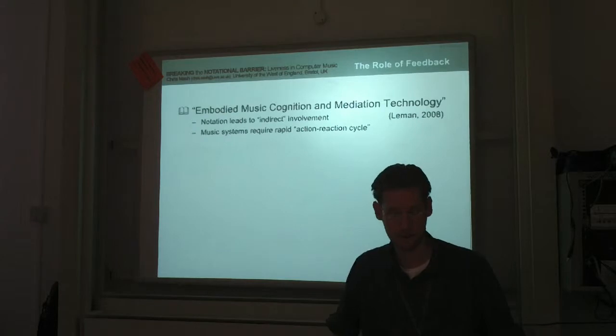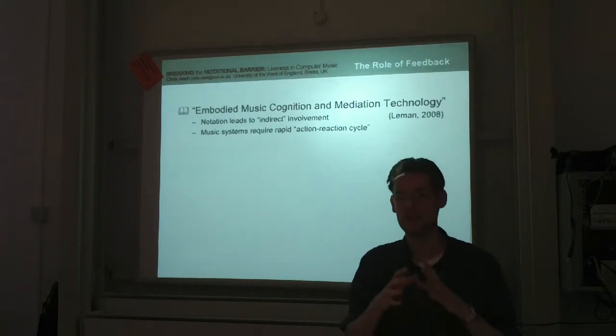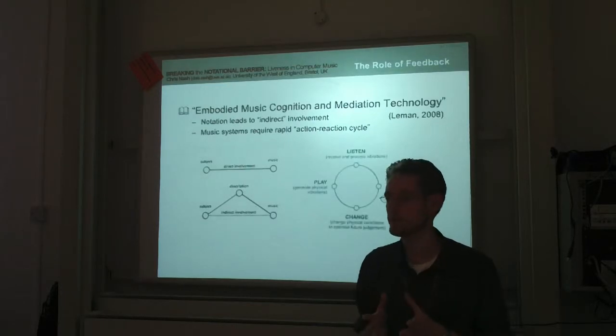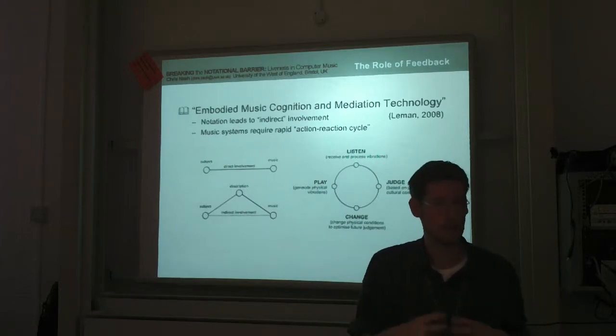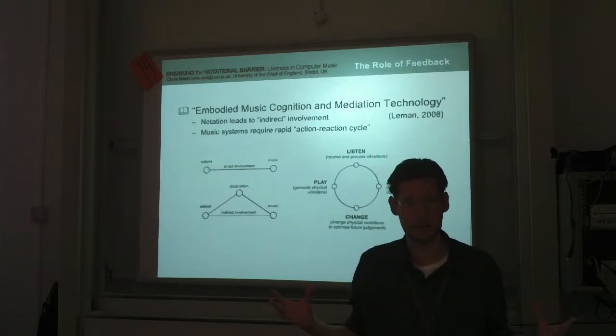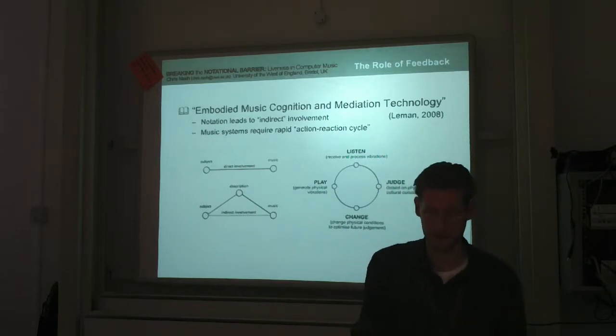Mark Lamont talks about this as notation as a barrier, effectively, to live, interactive, and really calls direct involvement. This abstraction layer prevents you from getting into the music. But he also talks about the importance of a feedback cycle. And when notation gets in there, the feedback cycle gets slower, effectively, and that's what breaks the kind of direct involvement, the embodied interaction.